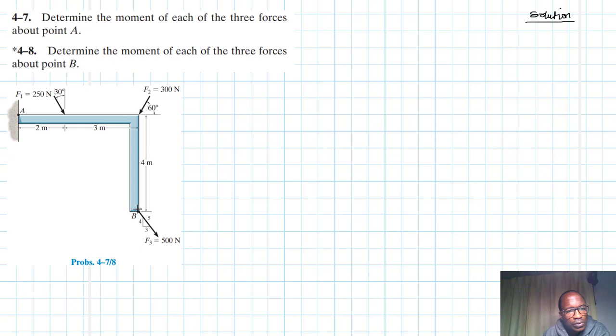So what we need to do is to rewrite these particular forces into their various components in the X and in the Y. And after we've done so, then we'll take moments about A for case 4-7 and moments about B for case 4-8. So let's write down the components.